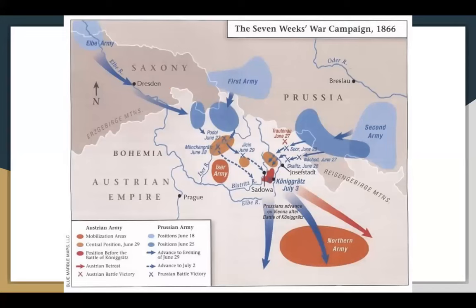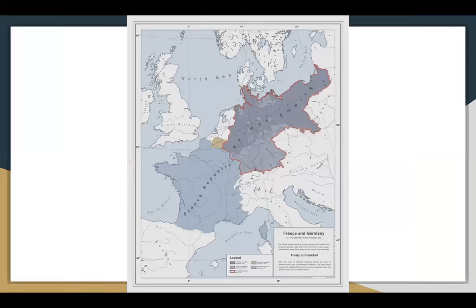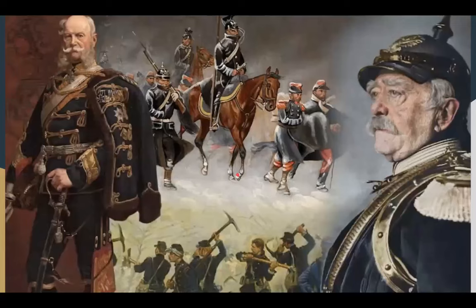On the map, this shows the Franco-Austrian — the Austro-Prussian War, or Seven Weeks' War — campaign, and this is France and Germany at the beginning of their battles. Alsace and Lorraine is this little area right here that was given up.